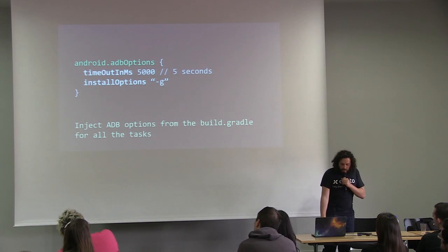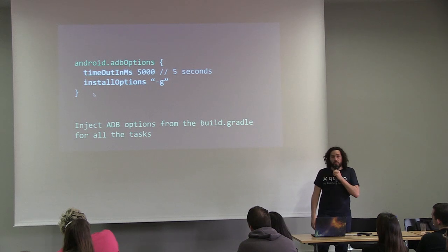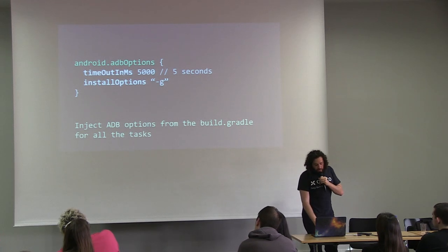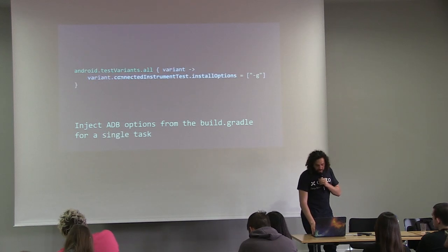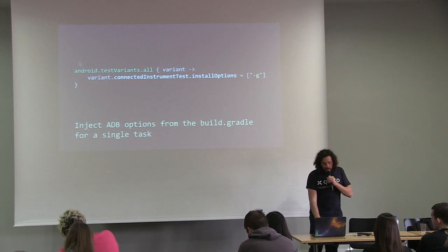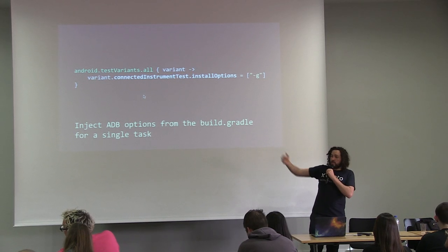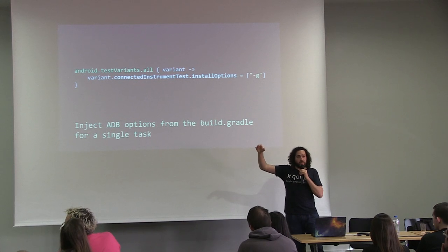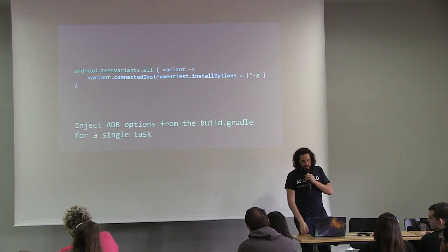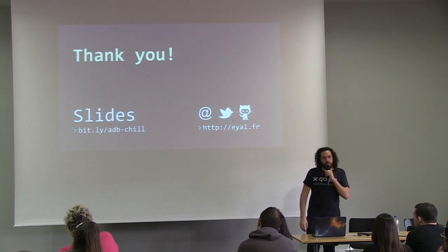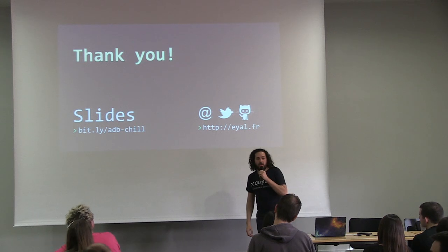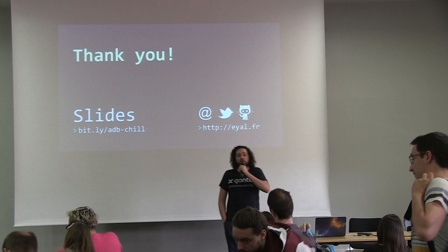For the very last slide: you can configure options from your `build.gradle` very simply — change the timeout or add install options directly for all your builds. And if you want to add a flag only for specific variants, there's an API: `androidTest.testvariant.all` — it loops over all your variants, product flavors, or debug and release build types, and you can have specific behavior depending on the flavor. That's all for me! We don't have any time for questions, so if you have any, I will be outside. See ya!